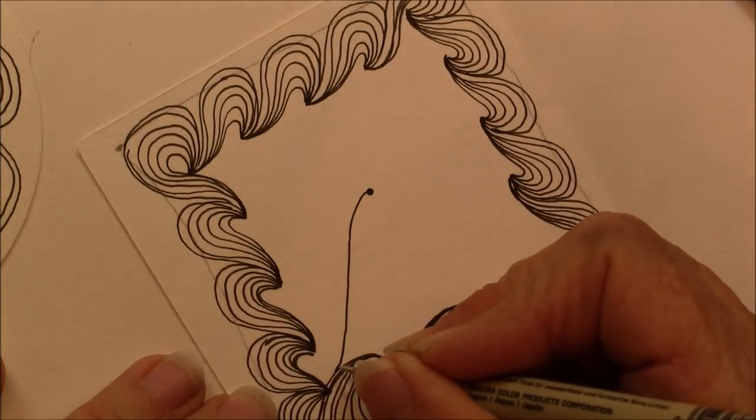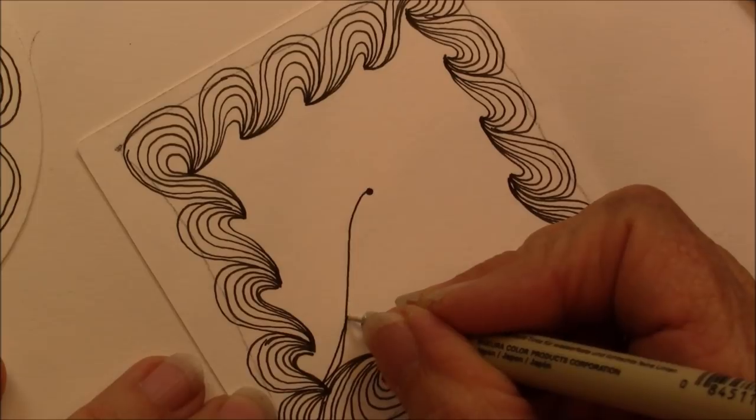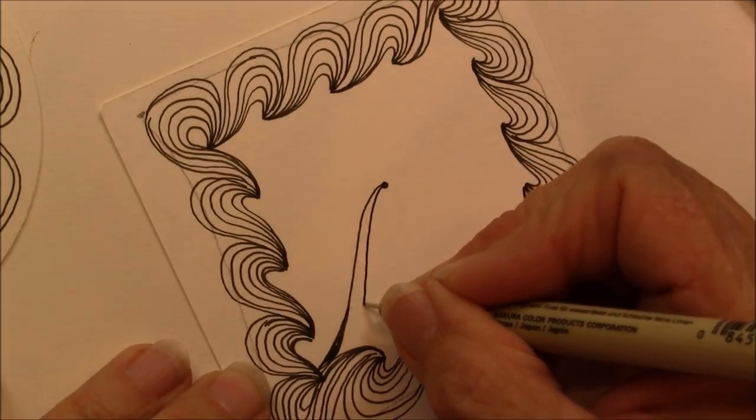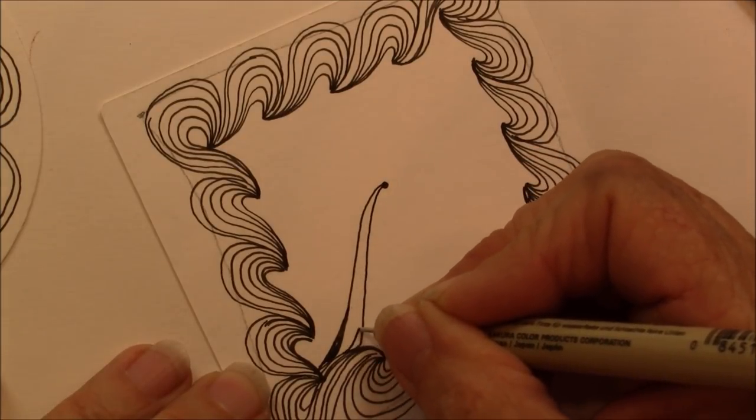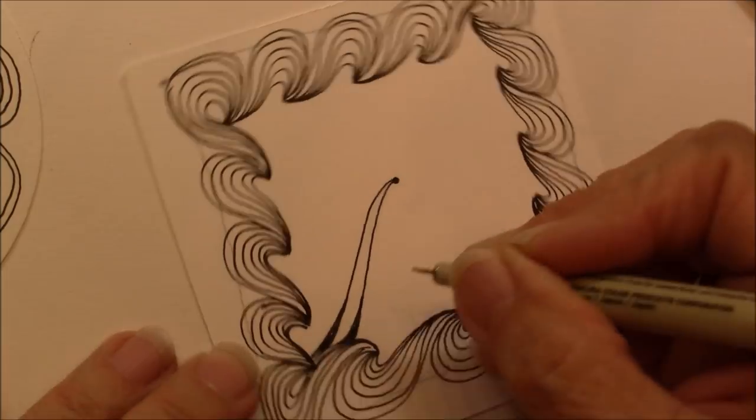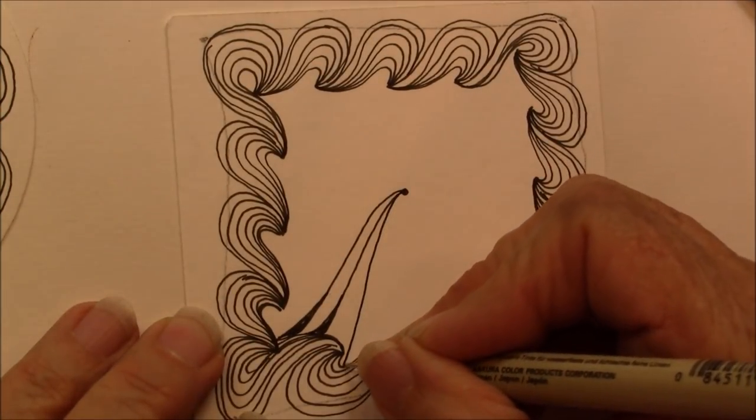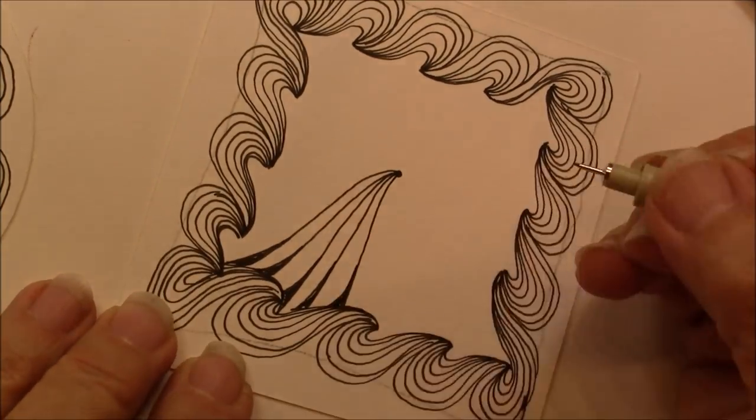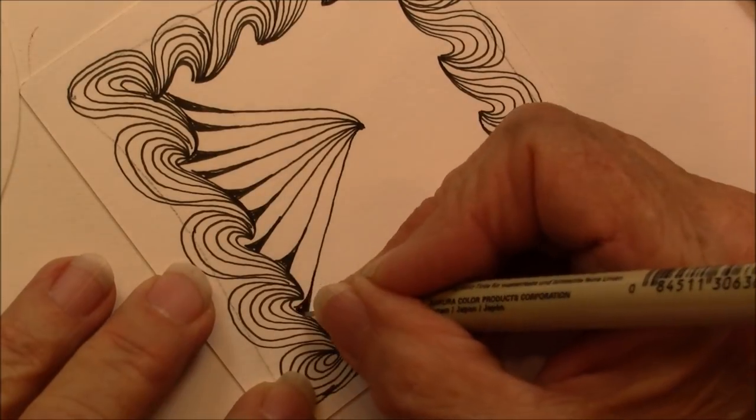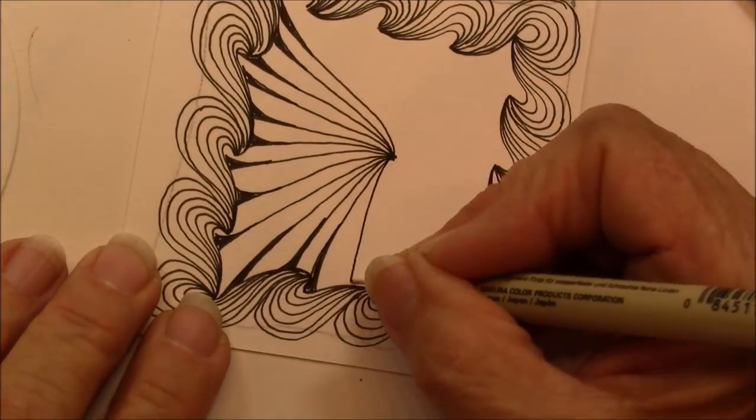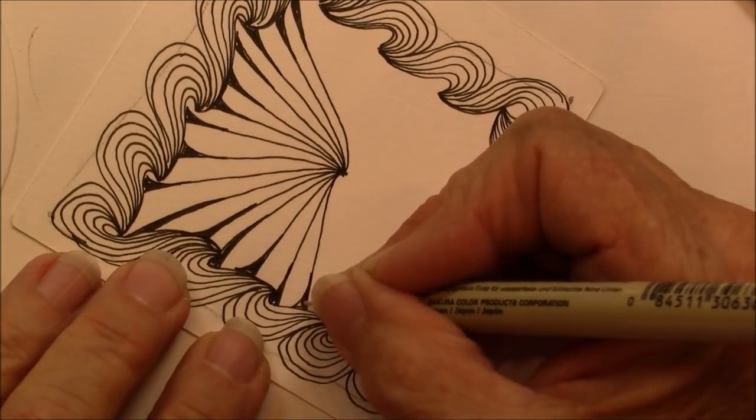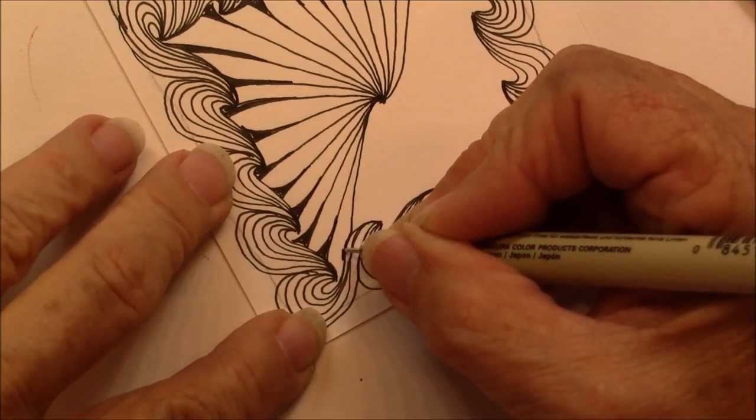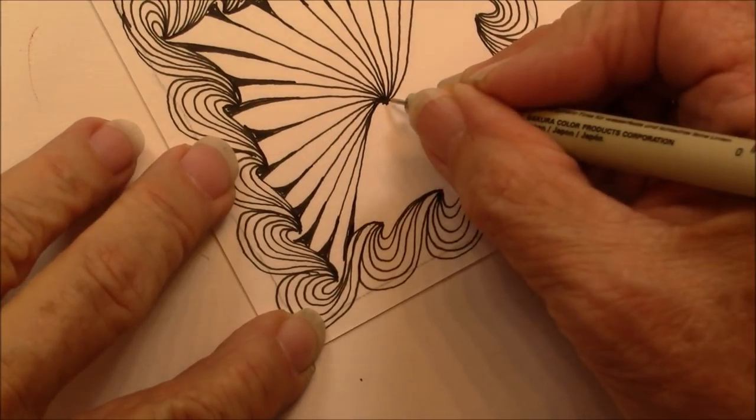And then I'm going to weight the back side of that line. I'm just going to put a little weight on the back side and I'm just going to repeat that. And that little weight I think on the ends just gives the drama that you need in a tangle.